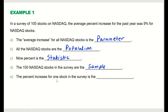The last question: the percentage increase for one stock in the survey is what? Here we are talking about data associated with an individual item in the sample or population. Whenever we refer to data at the individual level, that is the variable. So the percentage increase for one stock in the survey is a variable.